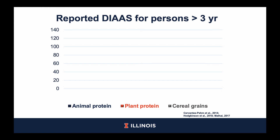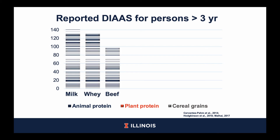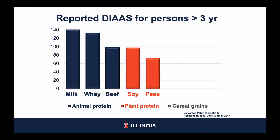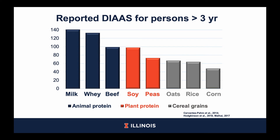A number of proteins have been assigned a DIAAS, and I will give a few examples for persons older than 3 years. The animal proteins are shown in blue, the plant proteins are shown in orange, and the cereal grains are in gray. Animal proteins — for example, milk, whey, and beef — generally have DIAAS greater than 100, meaning they are of excellent quality. Plant proteins — for example, soy and peas — generally have DIAAS between 75 and 99, meaning they are generally good sources of protein. Cereal grains — for example, oats, rice, and corn — generally have DIAAS less than 75 and therefore need to be complemented by a higher quality protein in order to supply adequate amounts of amino acids to humans.